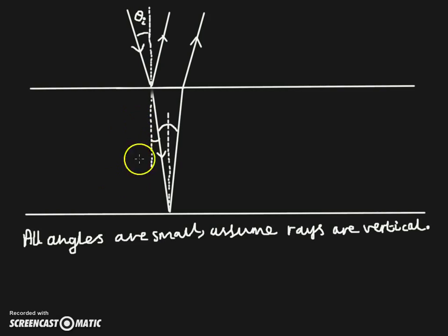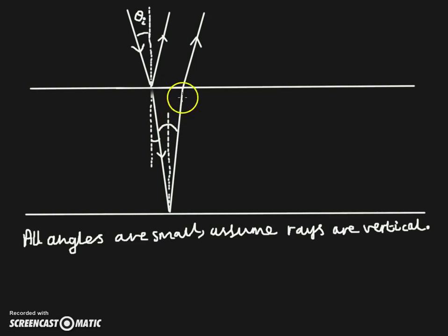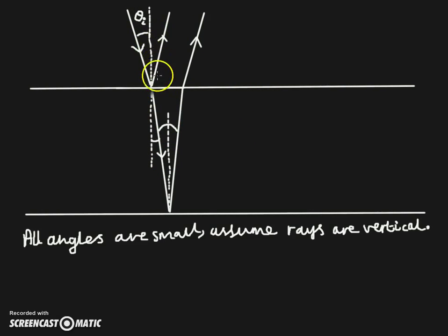I've just redrawn the diagram to hopefully make it more clear. Now, all angles are small — the angle of incidence, the angle of reflection, and the angle of refraction are all very small. That's because the light rays are hitting these boundaries from very, very far away. So we are going to assume that the light rays are traveling completely perpendicular to this boundary, to simplify things.